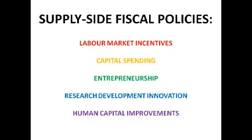Research, development, and innovation: the government gives businesses tax credits and tax allowances to encourage an increase in private sector R&D — for example, into new capital ideas or products. If a new machine can produce 20 mobile phones an hour instead of five, that dramatically increases the productive capacity of the economy. An increase in overall productivity leads to a rightward shift of the long-run aggregate supply curve.